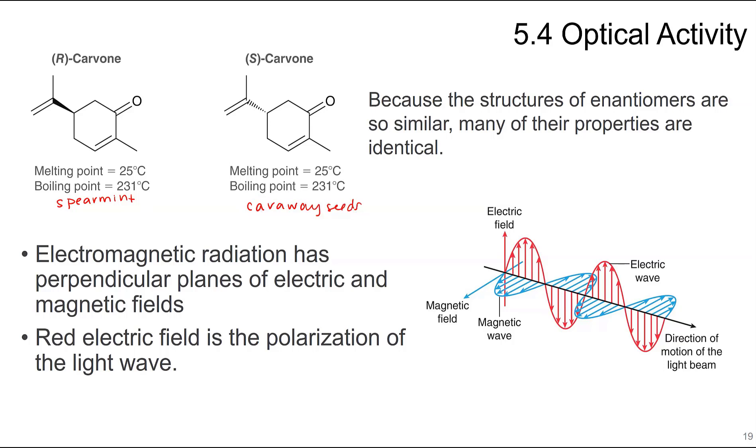The structures of enantiomers are very similar, and many of their properties are identical. These are their physical properties, not necessarily their chemical properties. The melting point of both of these is 25 degrees, and they also have the same boiling point.